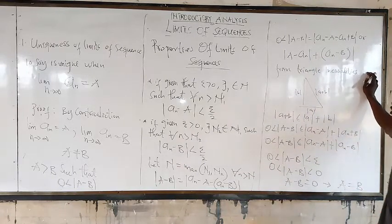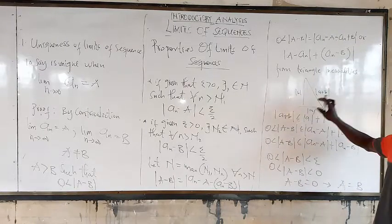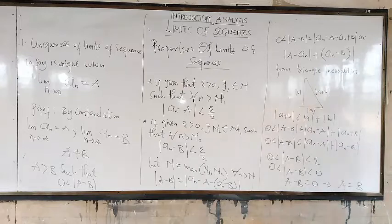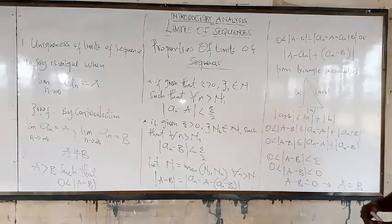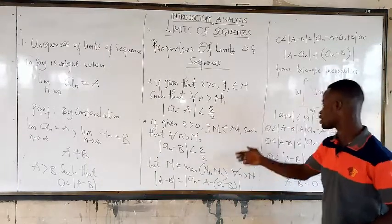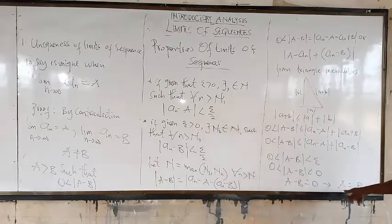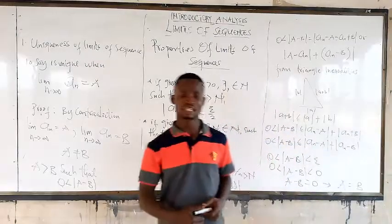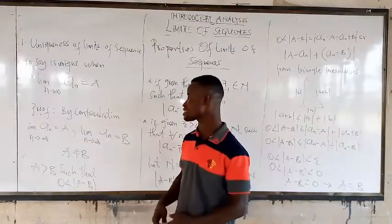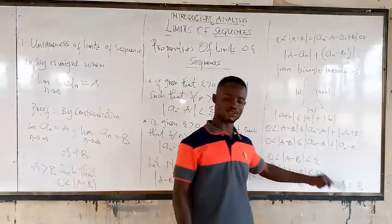From triangle inequalities we know — search for this — that is this plus this. Now if that be the case, then we are saying that this is less than or equal to that side. So when we apply the substitution of what we have here, we now get A to be equal to B. This is a contradiction, because we have already stated that A cannot be equal to B.